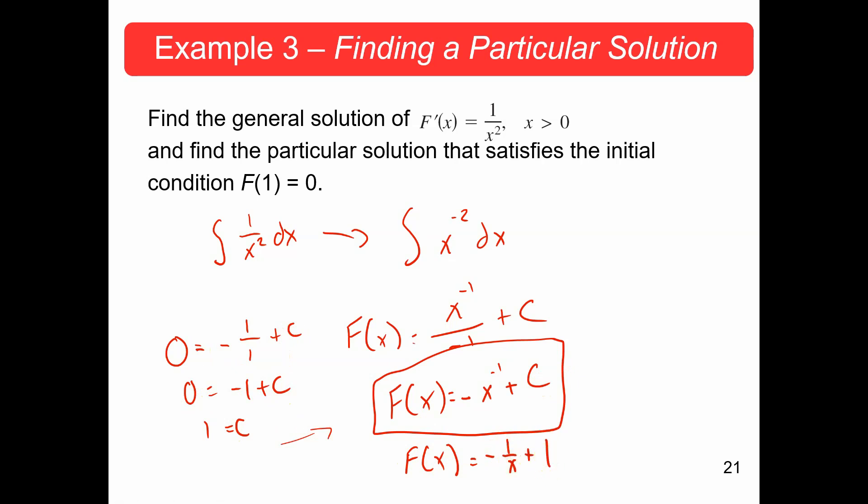And we can check this. We can take the derivative of this. The derivative of negative 1 over x is, change the sign, make that x squared. So, positive 1 over x squared, derivative of a plus 1 is 0. So, I know that the derivative is right, but it's the f of 1 equals 0. So, if I plug in 1, I get negative 1 plus 1 is 0. Absolutely.